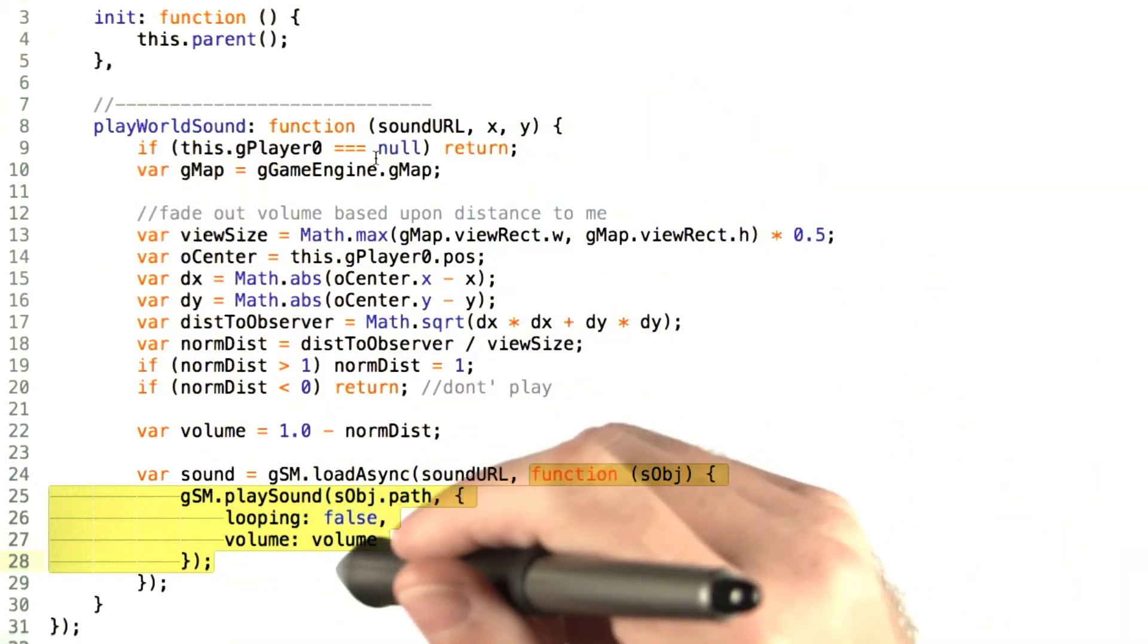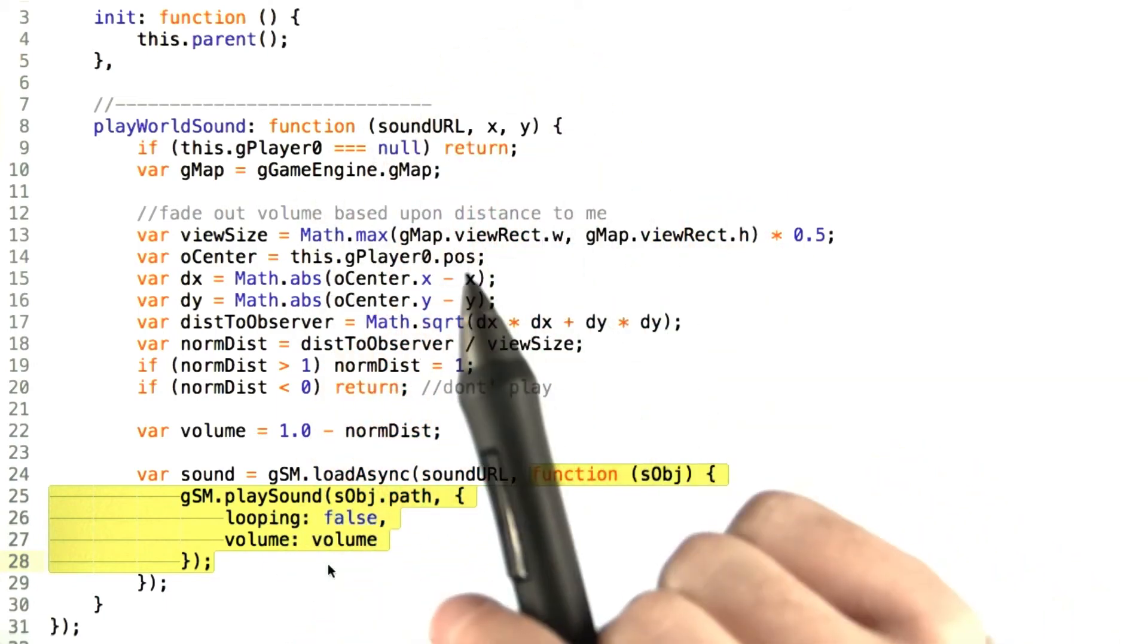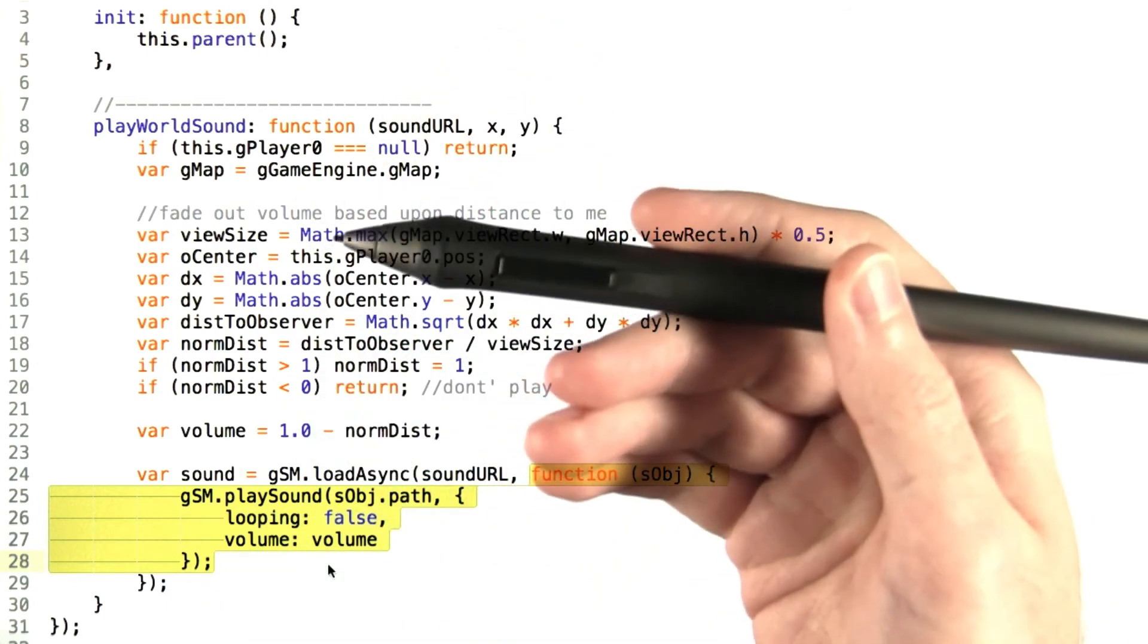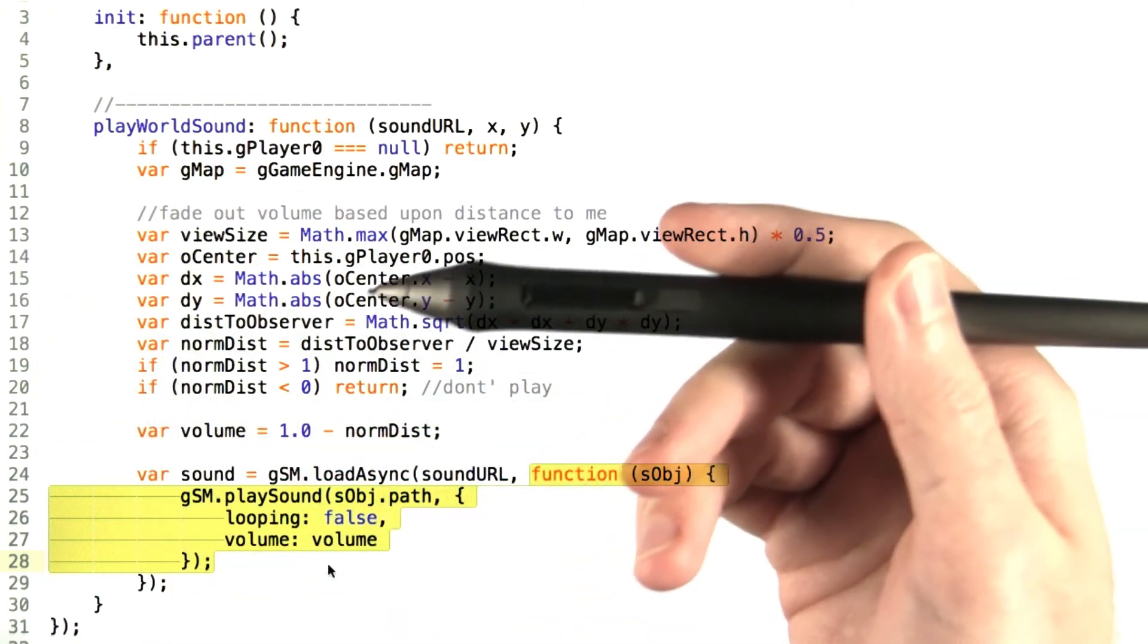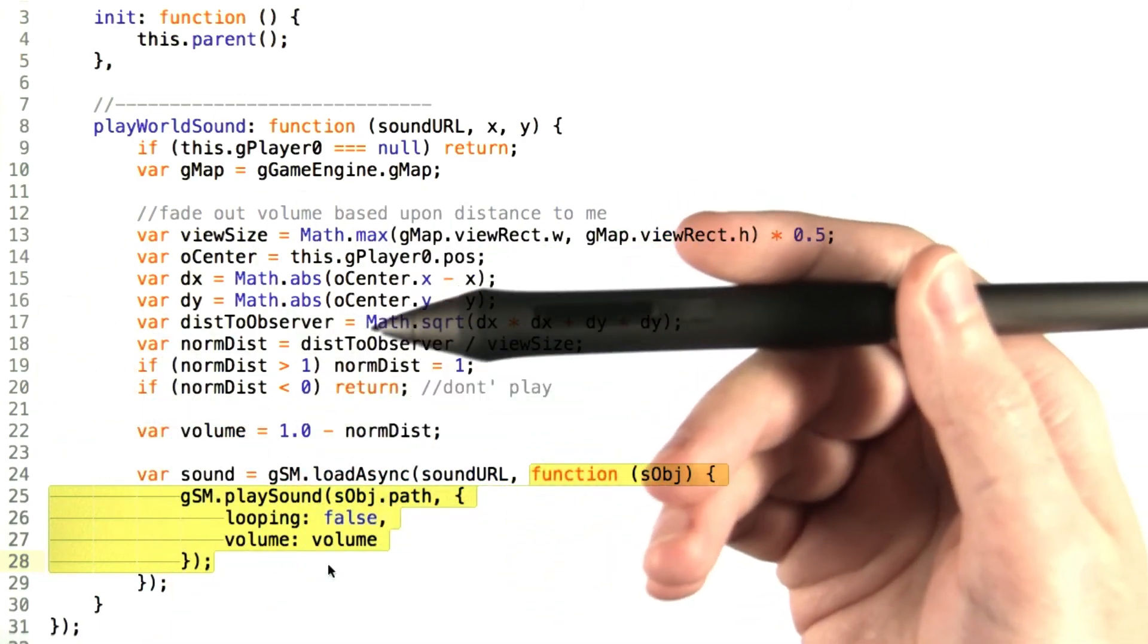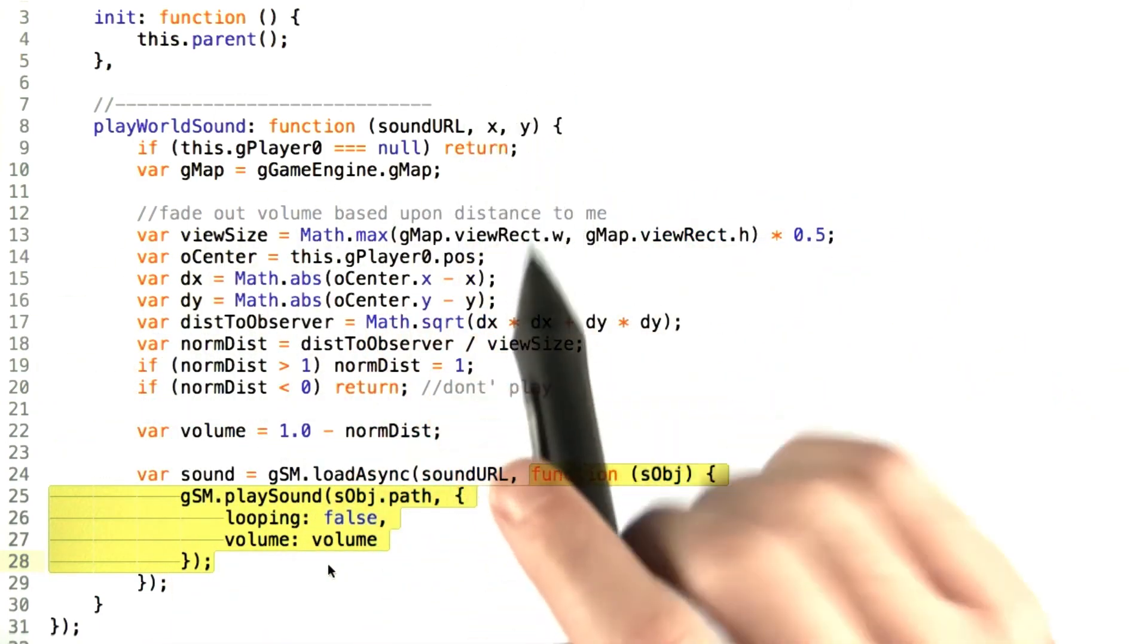Once this function is written, we'll have a nice effect where the further a sound is away from a player, the more quietly it's played until the player can't hear it at all, creating a more realistic sound environment.